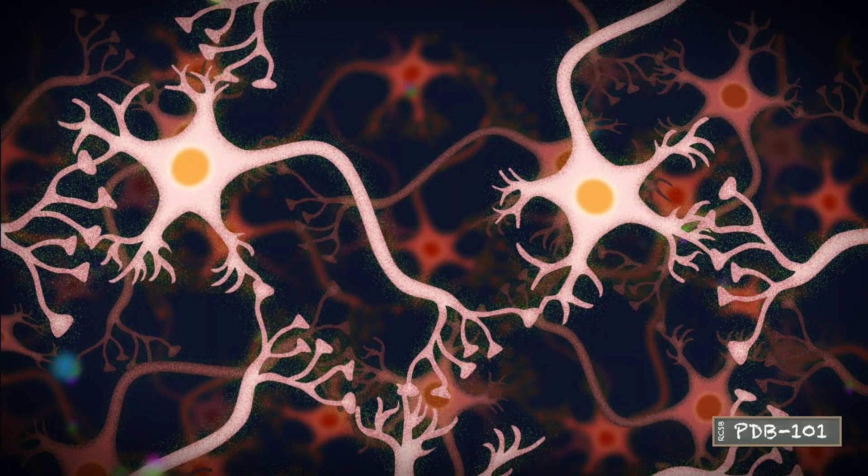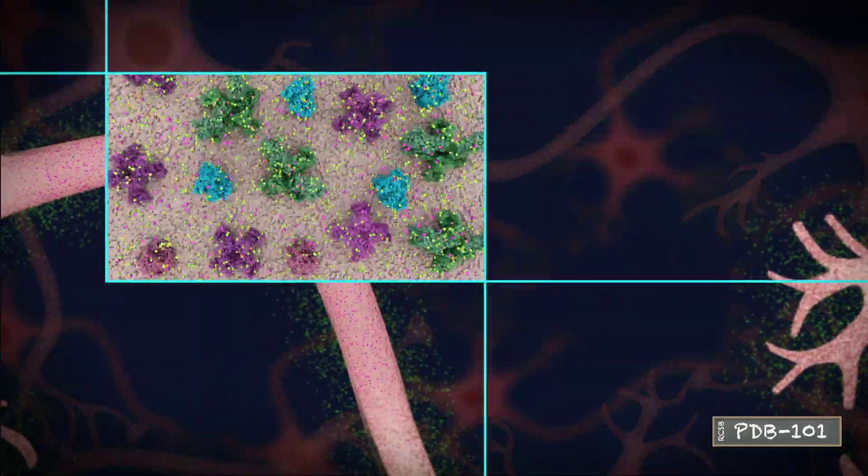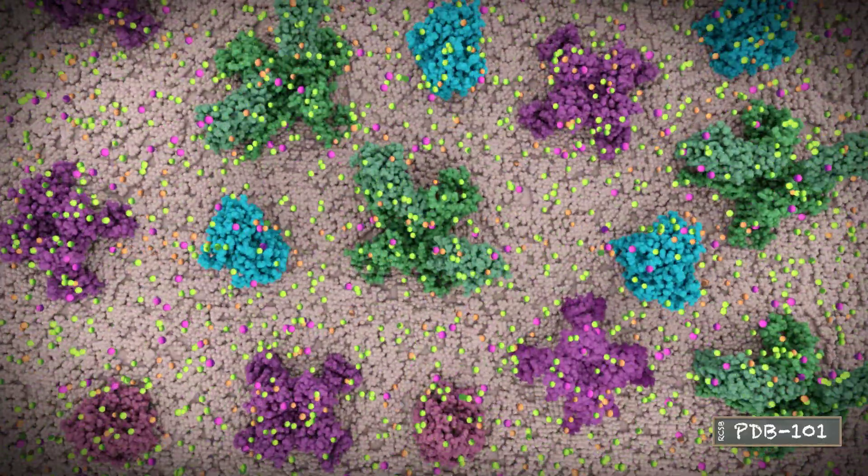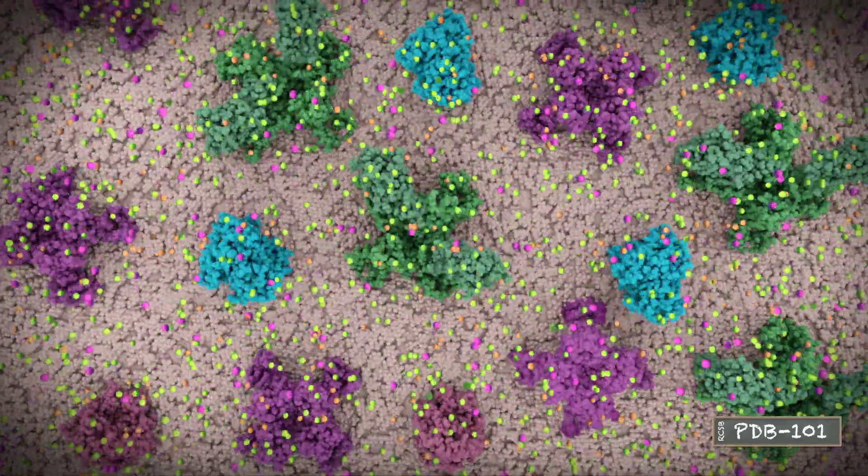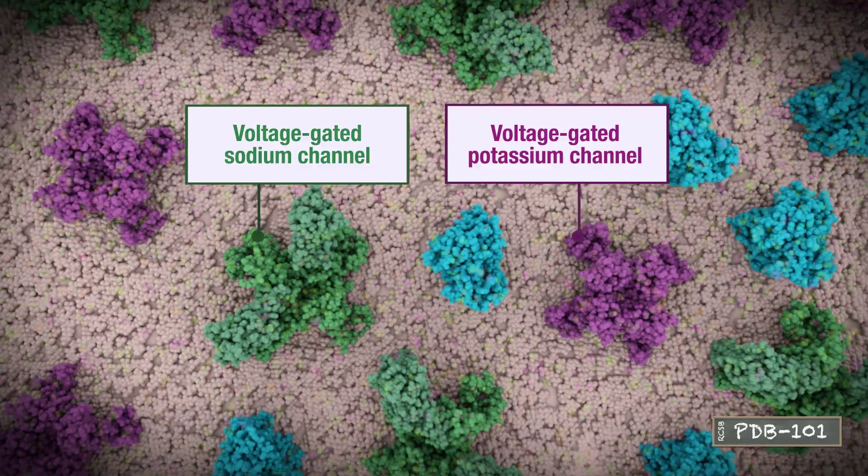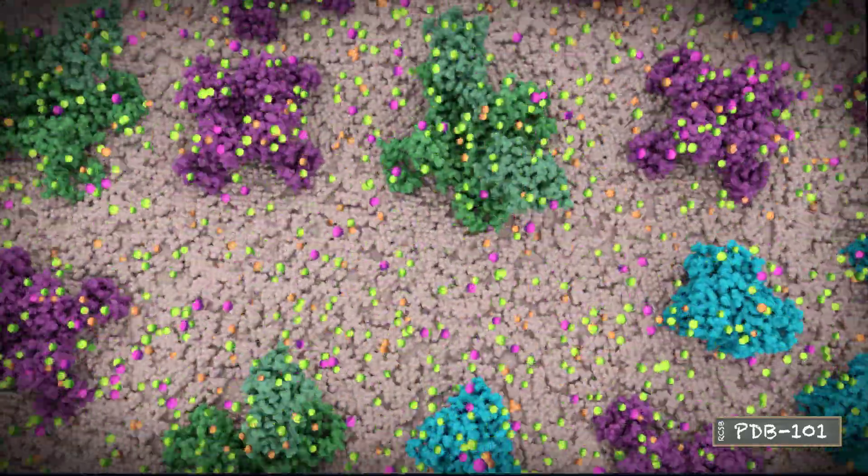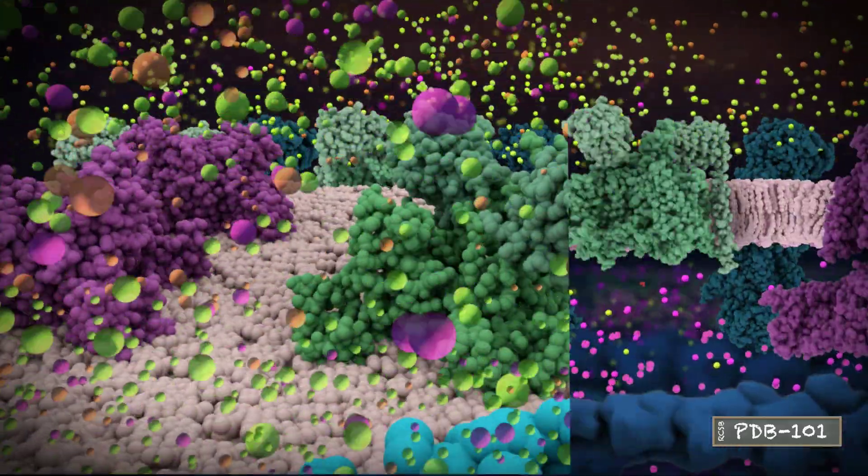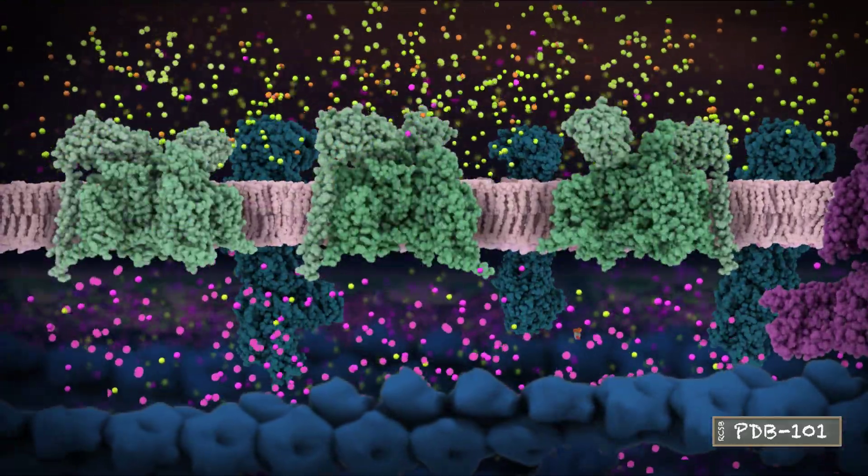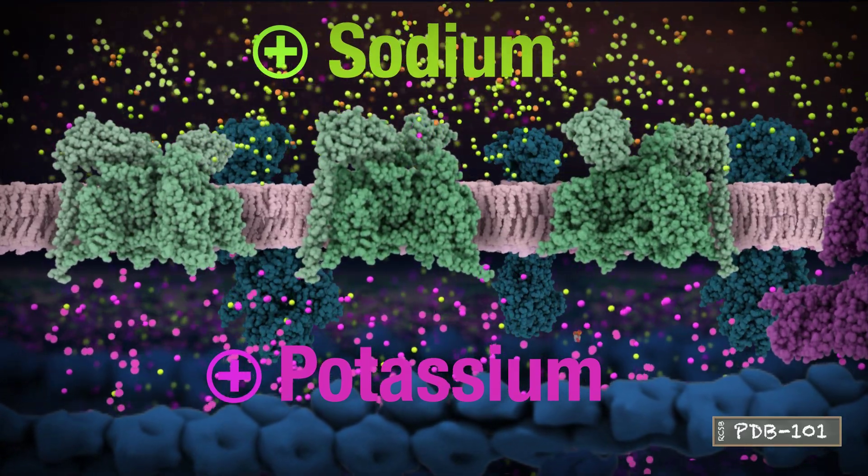Neurons in our nervous system use electrical impulses to transmit information throughout our bodies. This process is mediated by membrane proteins called voltage-gated ion channels. Voltage-gated ion channels open and close in reaction to changes in membrane voltage or membrane potential. A cell membrane potential is generated by concentration gradients of positively charged sodium and potassium ions across the membrane.